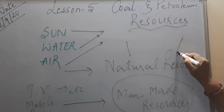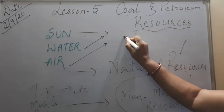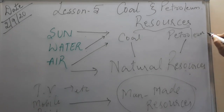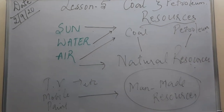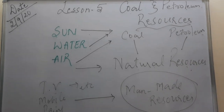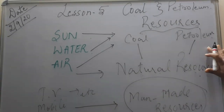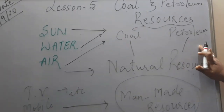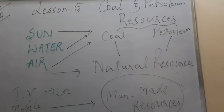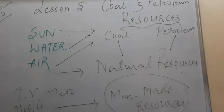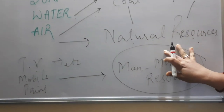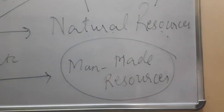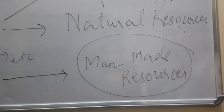In natural resources, we will include two more resources related to this chapter: coal and petroleum. They are natural resources because they are formed in nature. But before we go to coal and petroleum, let us understand that there are two types of natural resources. In this chapter we will be studying about natural resources, and under natural resources there are two types: exhaustible and inexhaustible.